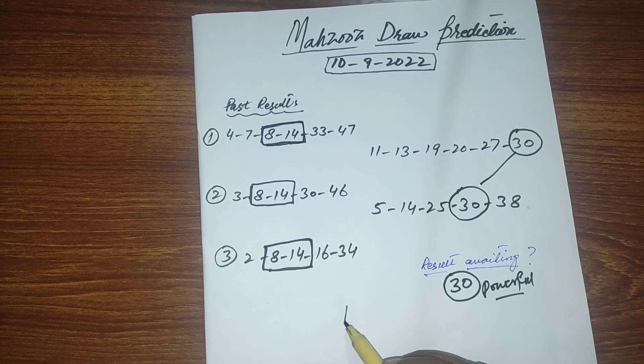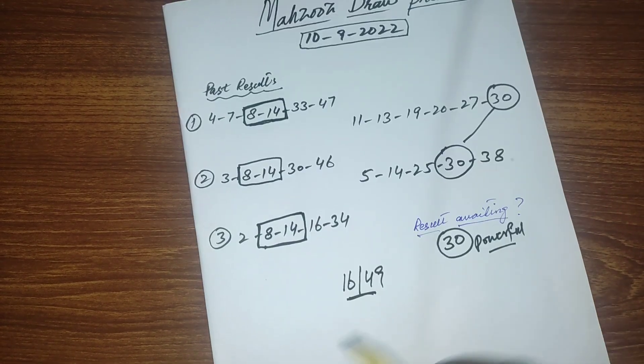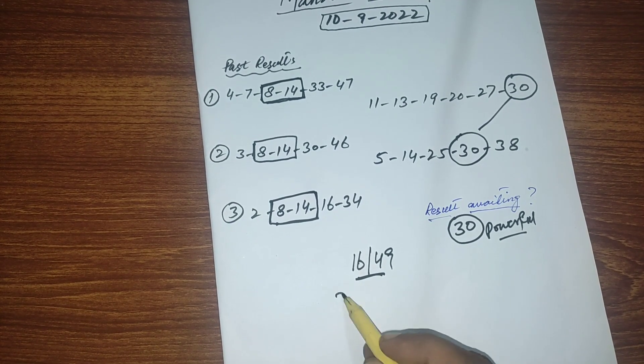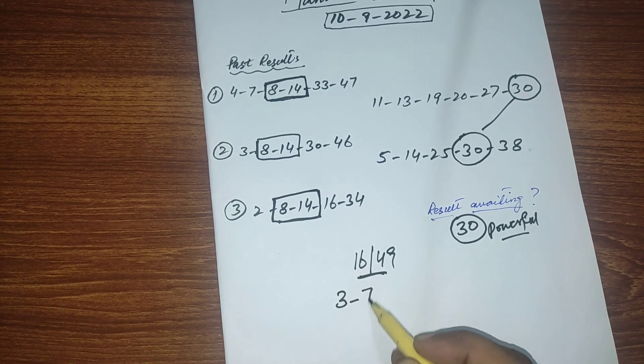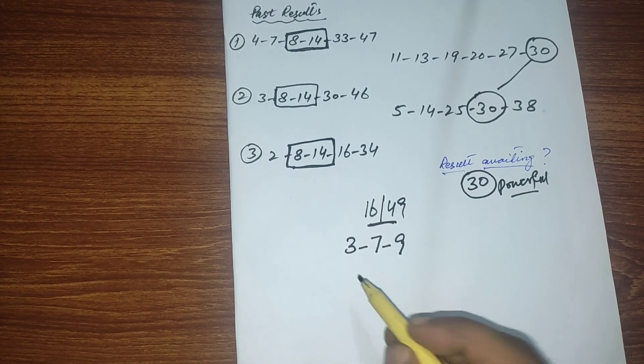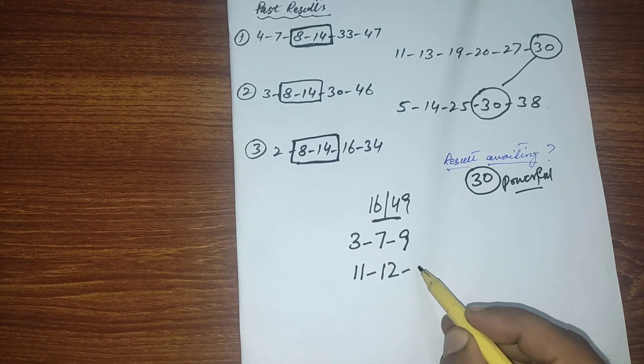Okay friends, my 16 powerful numbers out of 49 for this draw: from 1 to 9 I have 3 numbers, number 1 is 3, then 7 and 9. From 10 to 19 I have also 3 numbers: 11, 12 and 13.